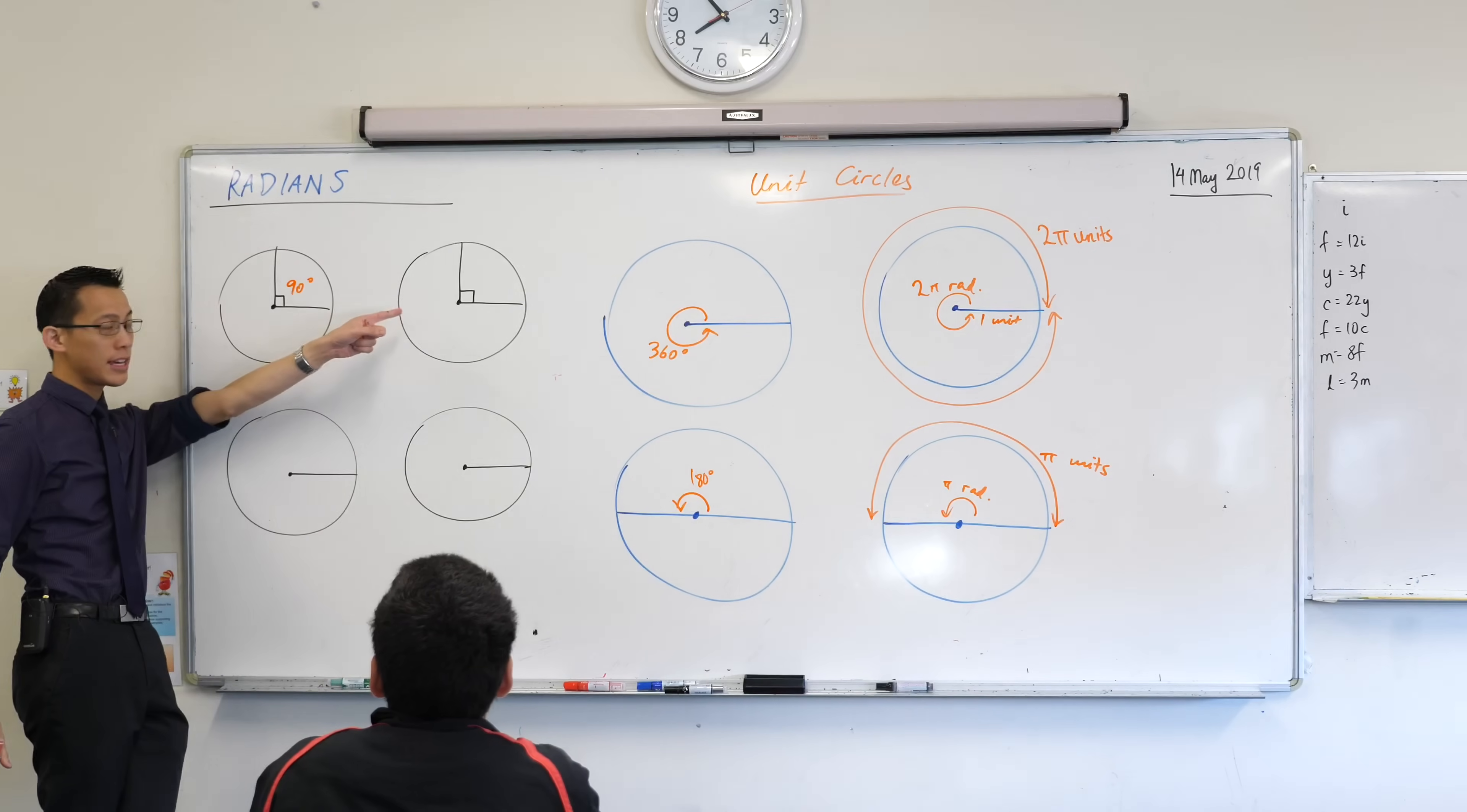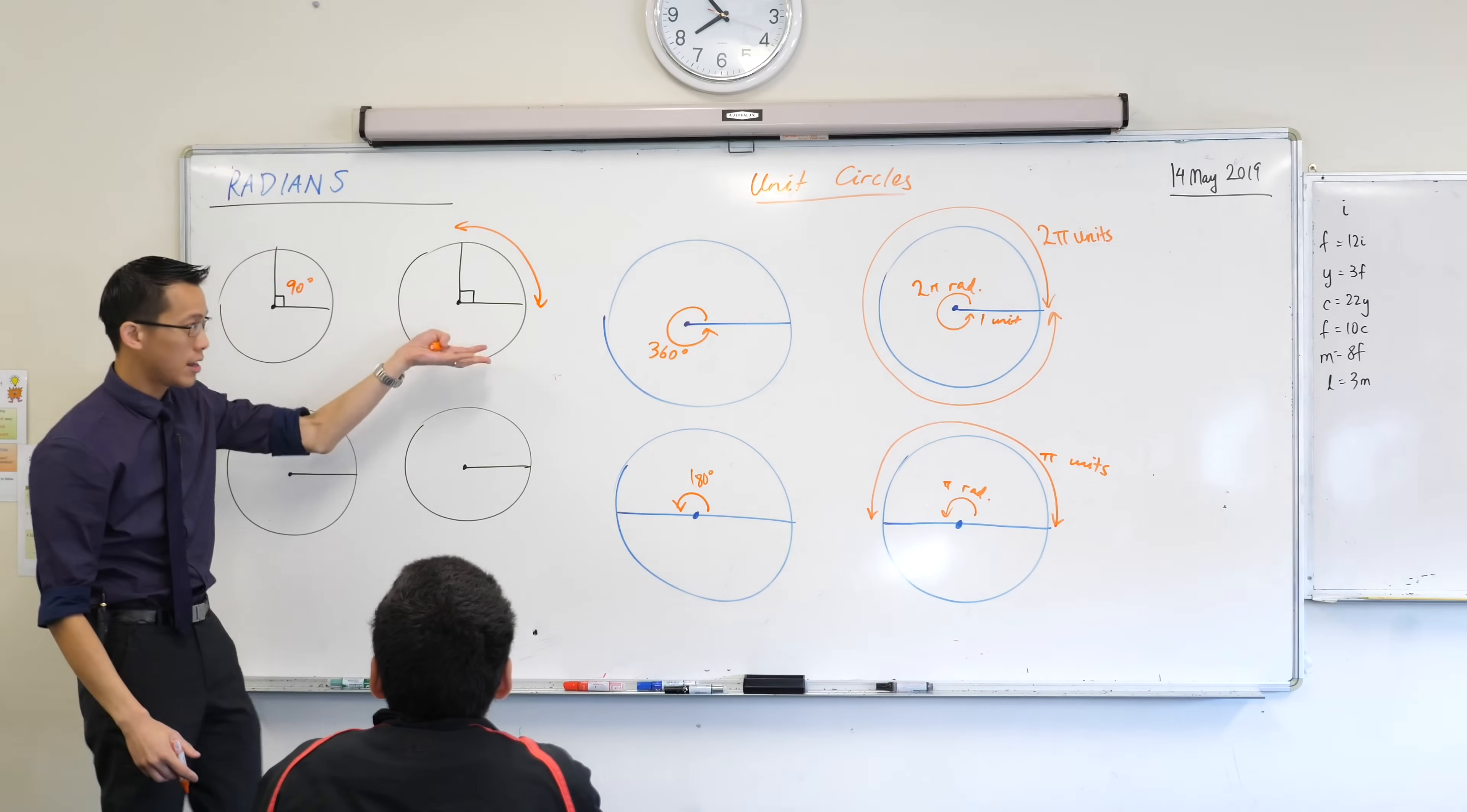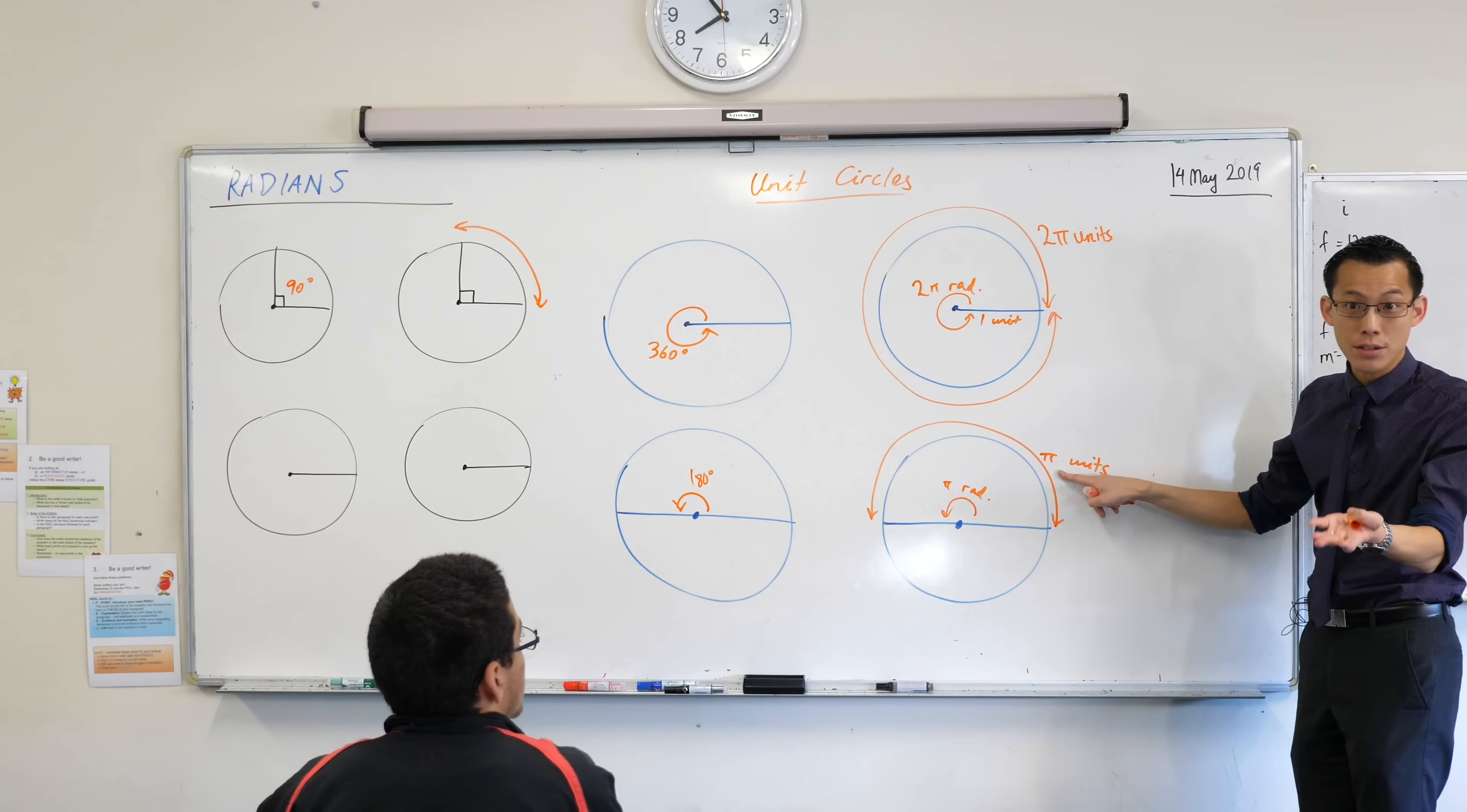But over here, when we think about this, the question you should be asking your head is, how far around the circumference have I gone for a right angle? And the answer is, well, I've gone a quarter of the way around. I haven't gone the full way. I haven't gone halfway. I've just gone a quarter of the way.